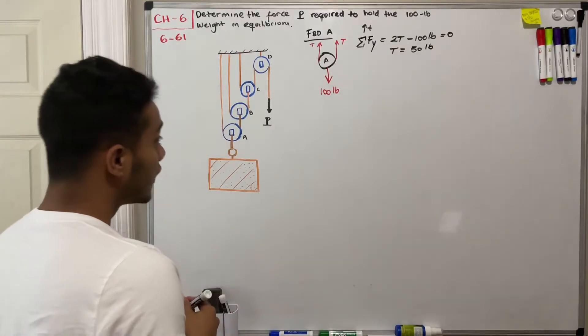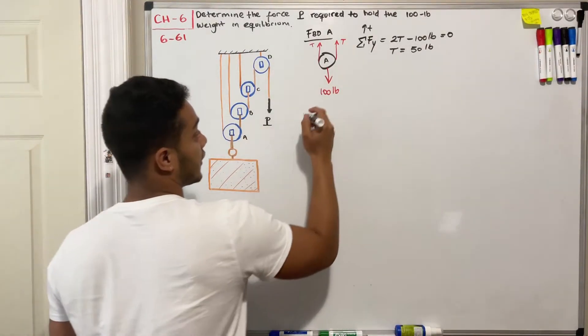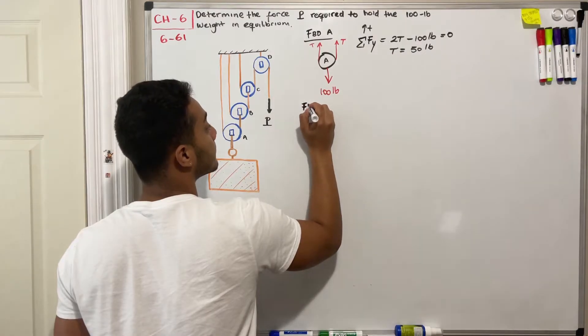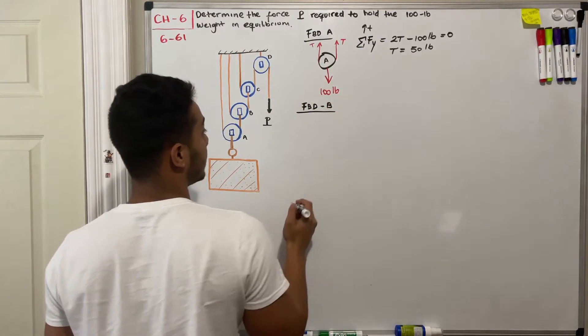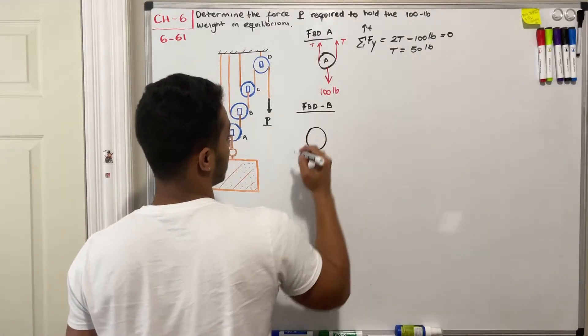The next thing we need to do is draw the free body diagram of my pulley B. What do I have?